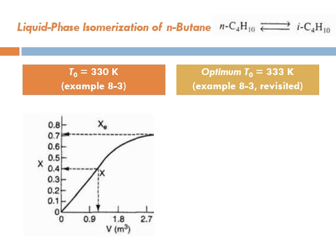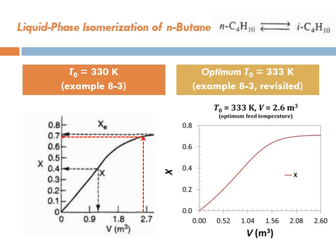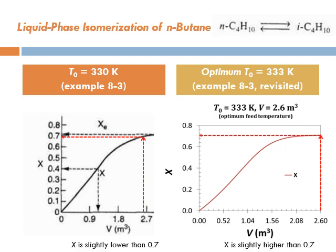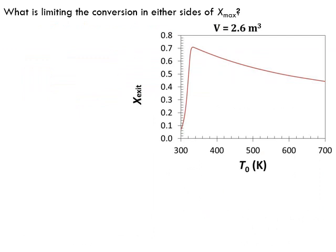In the original example H3, the feed temperature was 330 K, giving a conversion slightly below 70%. With the optimum feed temperature of 333 K — only 3 degrees higher — the conversion is slightly above 70%. This means the reactor was already nearly optimized: the feed temperature in the original case was essentially at the optimum for a 2.6 m³ reactor volume.